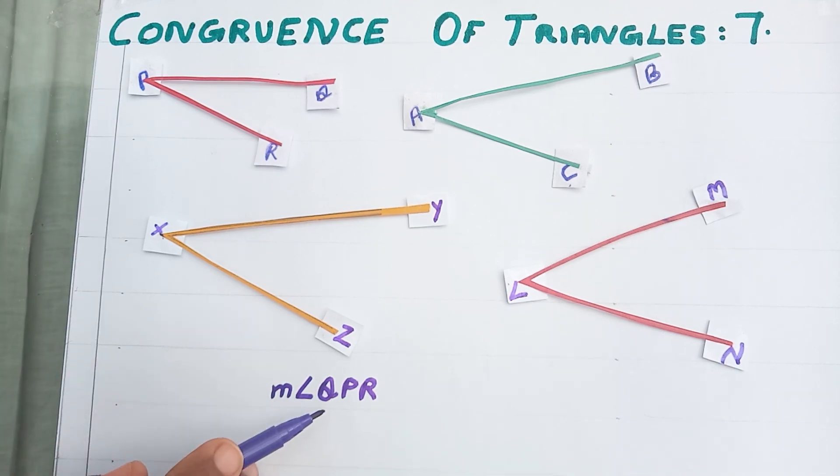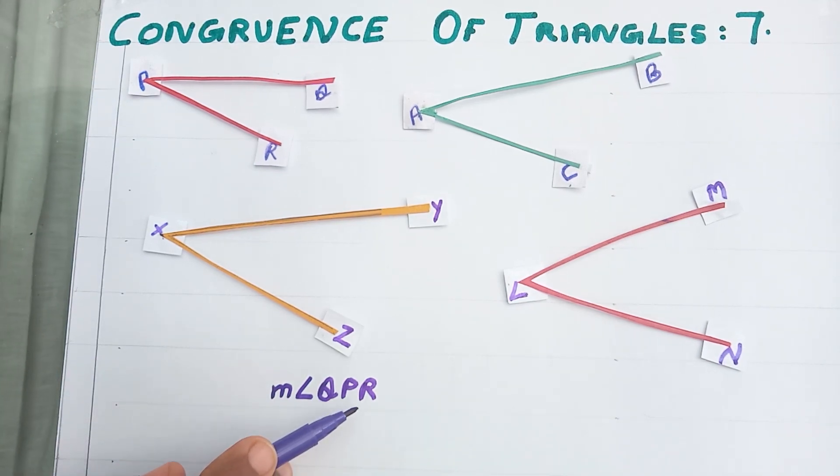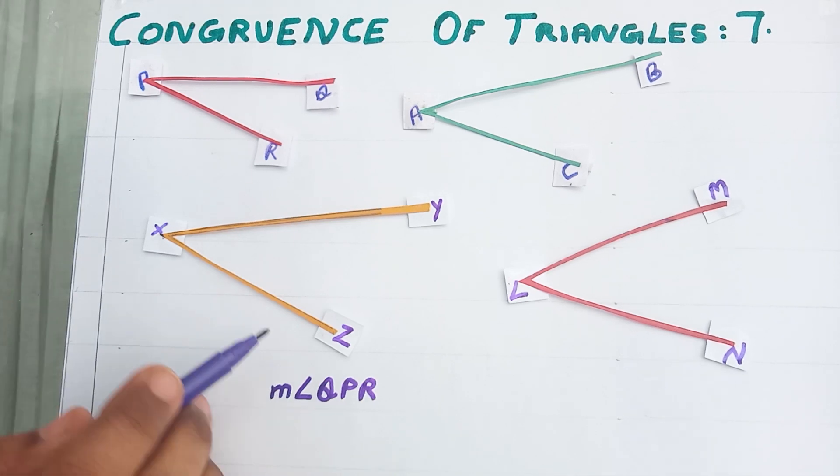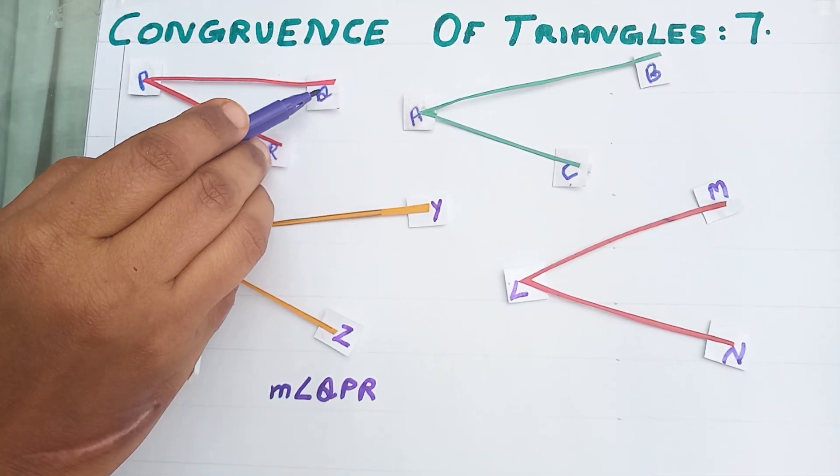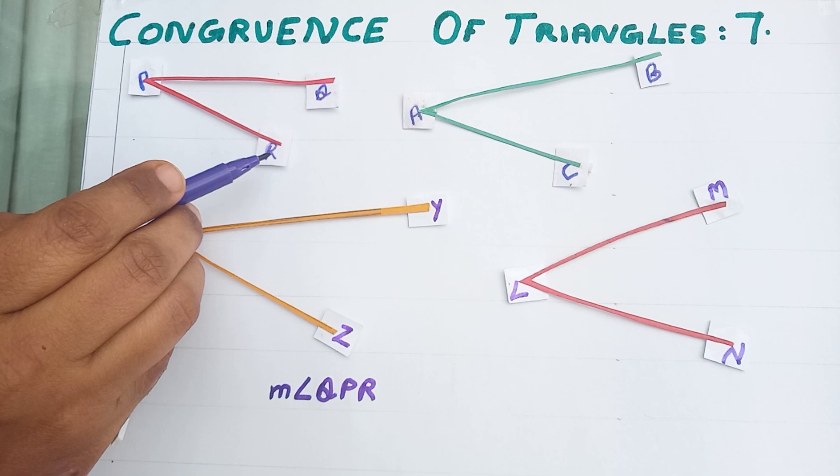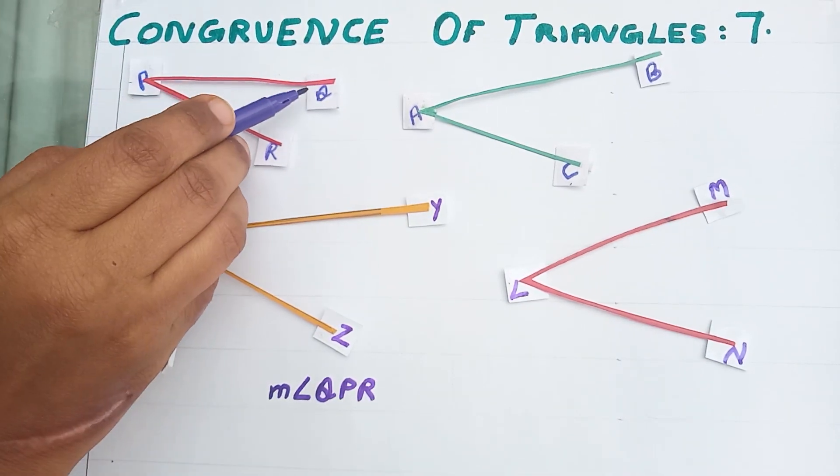Always while we are saying the name of an angle always the vertex should be in the middle. So, if you want you can read QPR or RPQ. Okay.